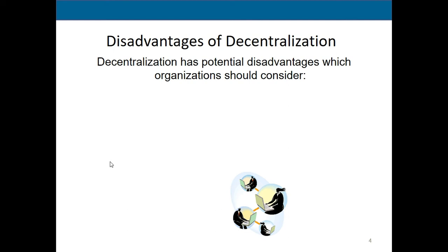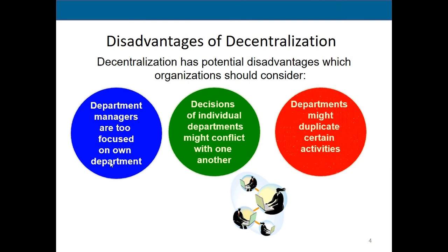Disadvantages can certainly happen. Department managers can be too focused on their own department — everybody wants to make sure their department is the best, and sometimes top management makes that worse by offering incentives or bonuses for being the best, which can have a reverse effect. Decisions of individual departments might conflict with one another. Departments might also duplicate certain activities if each is focused only on its own area, when those activities could be handled centrally.